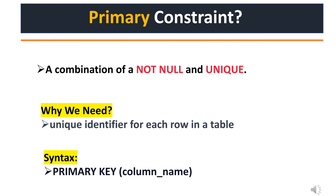There are several types of constraints in SQL. We're going to explore the most common ones, starting with primary key. The primary key constraint is like a unique identifier for each row in a table. When we say unique, it means it cannot be duplicated and it cannot be null. This is very important from an interview perspective — it is a combination of NOT NULL and UNIQUE key.